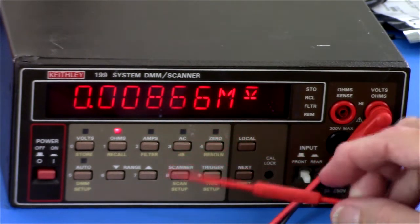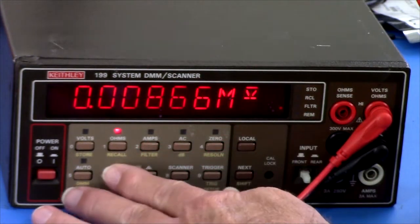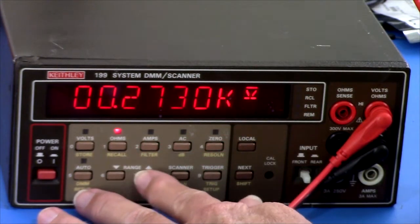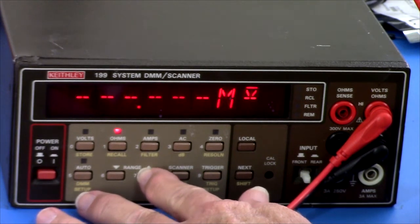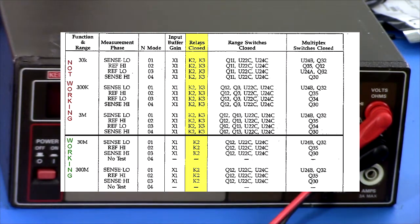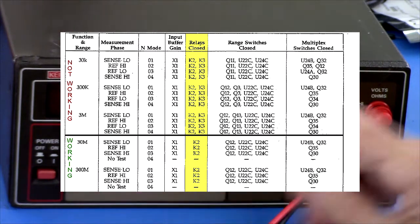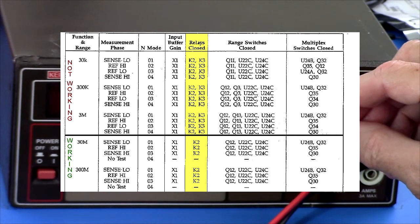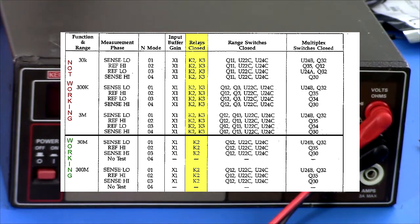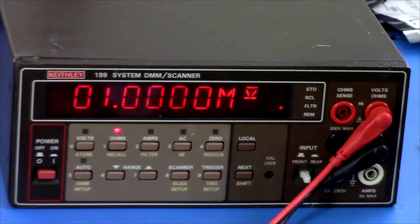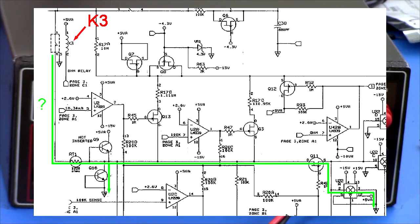And the difference between this scale, all the lower scales, right, and those top two is that relay K3 is engaged, is not engaged on the top two but is engaged on the lower ones. So the problem appears to lie somewhere after K3 in the circuit there.